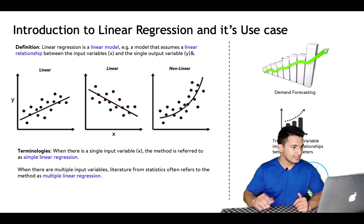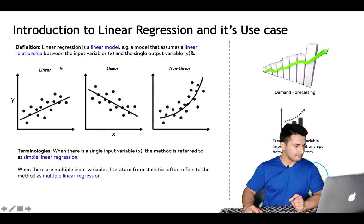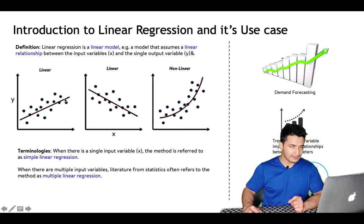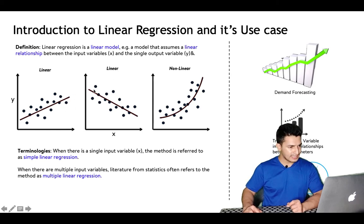Linear regression is a linear model. Looking at a plot of y and x, a linear relationship means as x increases, y increases or decreases in a linear fashion. In the first two examples the relationship is linear — either increasing or decreasing — while in the third case the relationship is non-linear.